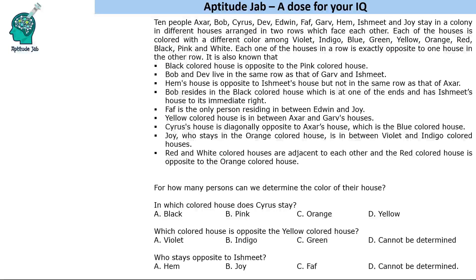Hello everyone, welcome to Aptitude Jab. This is a set based on arrangement. There are 10 people, you can call them A to J. They stay in a colony in different houses arranged in two rows which face each other. Each house is coloured with a different colour, and each house in a row is exactly opposite to one house in the other row. So we have 10 houses, 5 in each row.